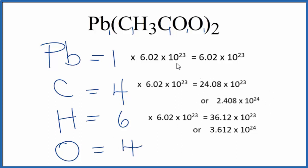So that's how you find the number of atoms in lead-2 acetate, Pb(CH3COO)2. This is Dr. B, and thanks for watching.